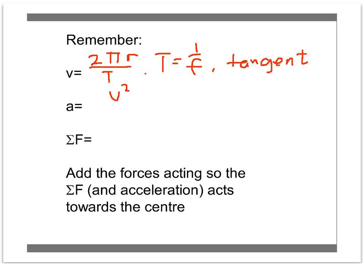Acceleration in a horizontal circle is v squared on r, and that's always to the centre of the circle, and force by Newton's second law, F equals ma, is just m times v squared on r, and it's also towards the centre.